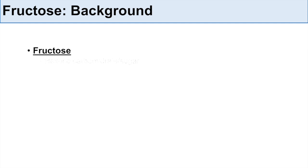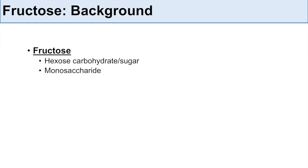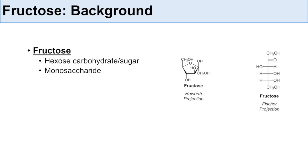So what is fructose? Well, fructose is a hexose carbohydrate or sugar, and it is a monosaccharide. Here is a Haworth projection of fructose, and here is a Fischer projection of fructose for reference.